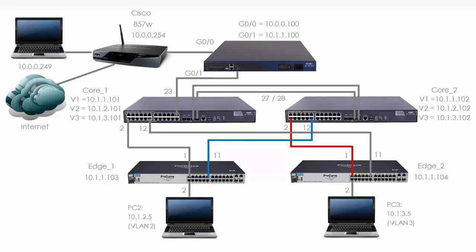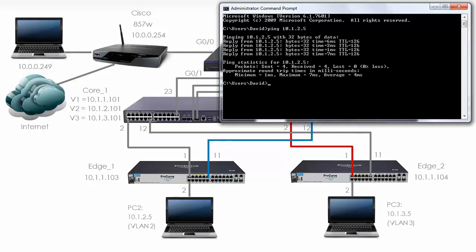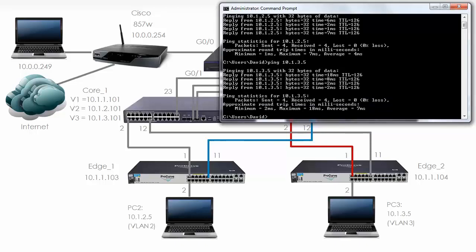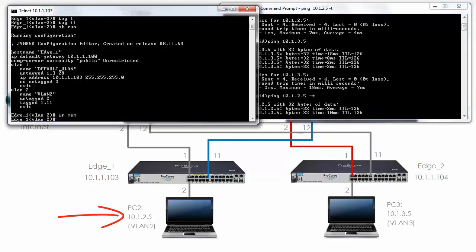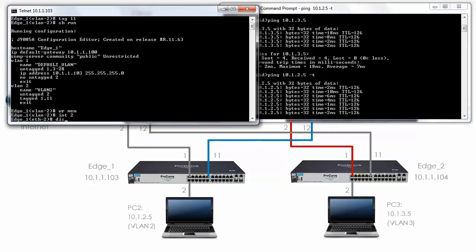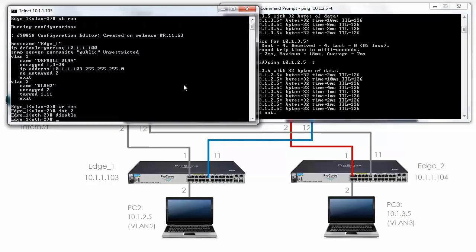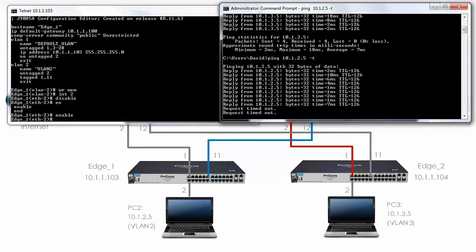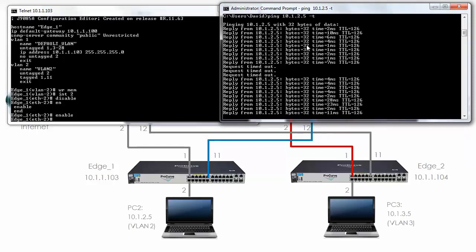Hopefully we've completed the configuration of this network. From my local PC at 10.0.0.249, can I ping 10.1.2.5? The ping succeeds. Can I ping 10.1.3.5? That ping succeeds too. To prove this works, I'll shut down the untagged ports on the ProCurve switches. Setting up a continuous ping to 10.1.2.5 — on edge 1, I'll go to interface 2 and disable it. The ping times out. If I enable the port again, the ping succeeds.